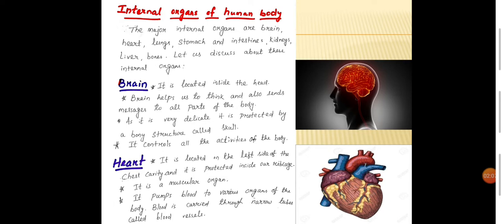Brain: It is located inside the head. It is a very important part of the human body. Brain helps us to think and also send messages to all the parts of the body. As it is very important and very delicate, it is protected by a bony structure called skull. It controls all the activities of the human body.